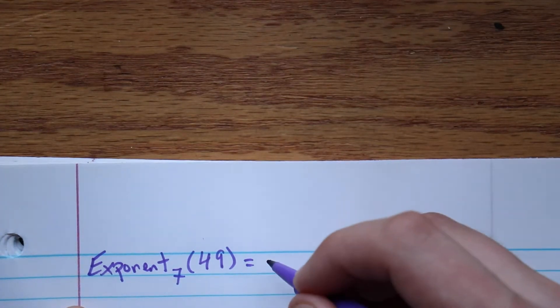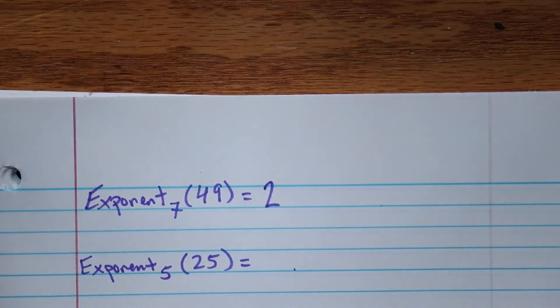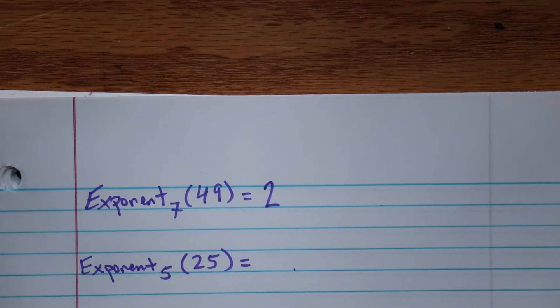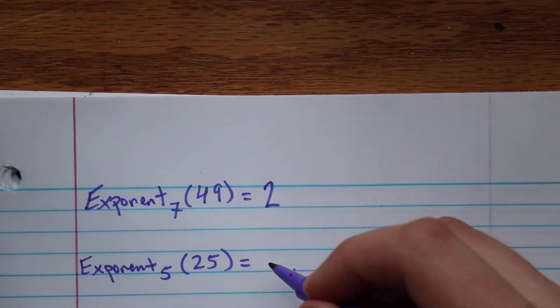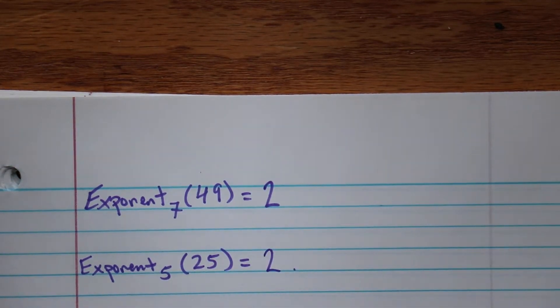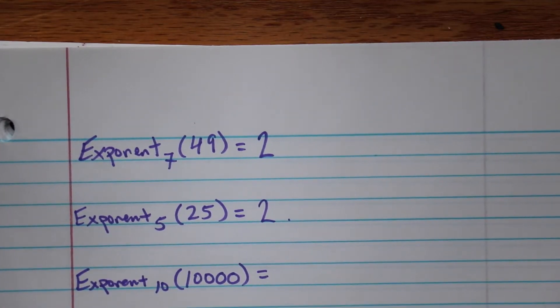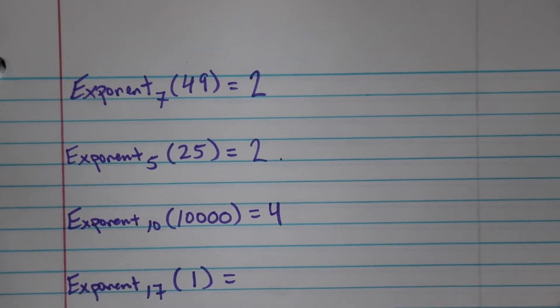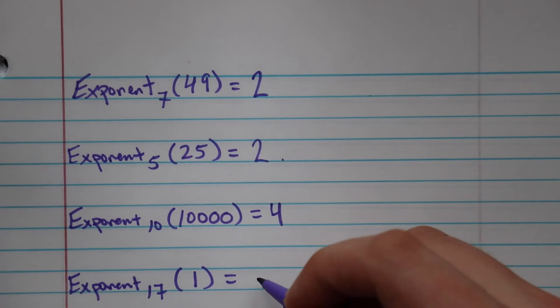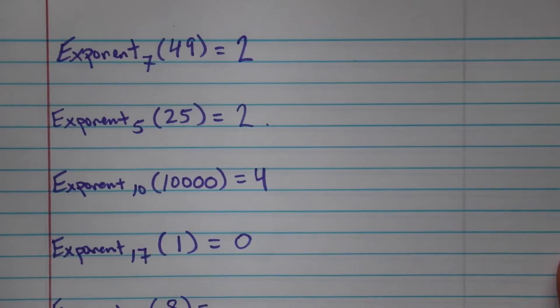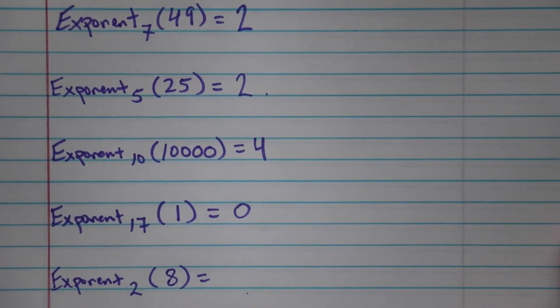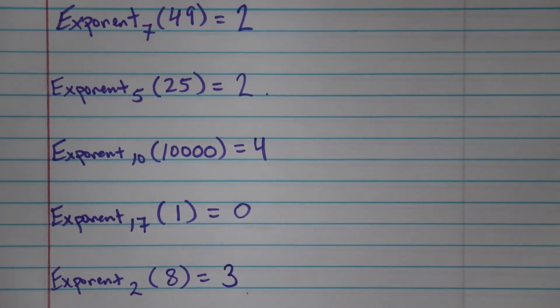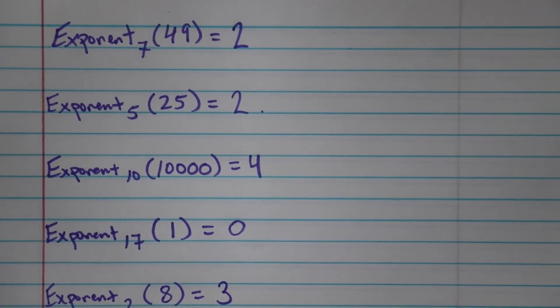Here's the game. Here is the first function. I'm gonna tell you that this equals 2. I'm gonna tell you that this equals 2. I'm gonna tell you that this equals 4. I'm gonna tell you this equals 0.